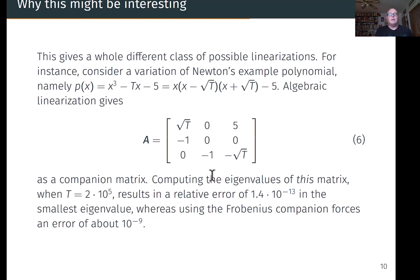For instance, let's consider Newton's example polynomial. Every new root finder has to solve Newton's example polynomial. It's the equivalent of coming in at the little gate. I'm going to make a variation: instead of x cubed minus 2x minus 5, I'll say x cubed minus tx minus 5, and I'll let t be a parameter. Now, I can immediately rewrite that as x times (x squared minus t) minus 5, so that's x times (x minus root t) times (x plus root t) minus 5.